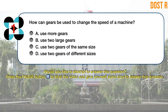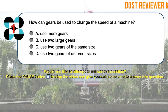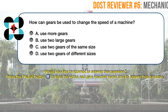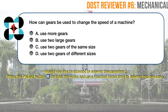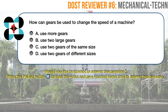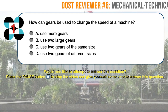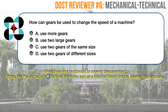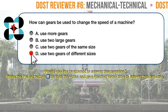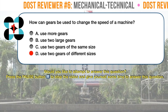Question number one. How can gears be used to change the speed of a machine? A. Use more gears. B. Use two large gears. C. Use two gears of the same size. D. Use two gears of different sizes. The correct answer is D: use two gears of different sizes.